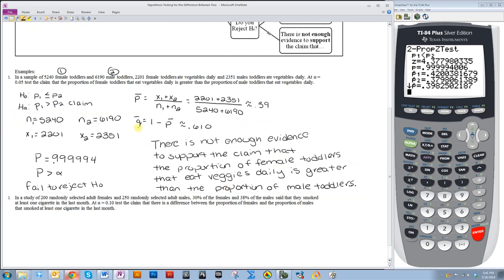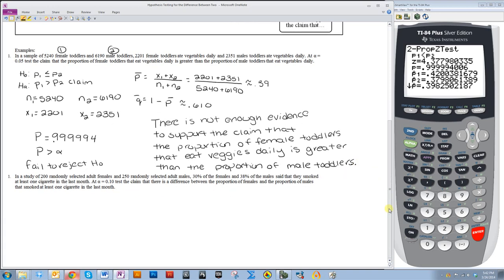In a study of 200 randomly selected adult females and 250 randomly selected adult males, 30% of the females and 38% of the males said they smoked at least one cigarette in the last month. At a 10% level of significance, test the claim that there is a difference between the proportion of females and the proportion of males that smoked at least one cigarette in the last month. So we'll let females be one, males be two. So we're testing the claim that p1 is not equal to p2, that there's a difference.